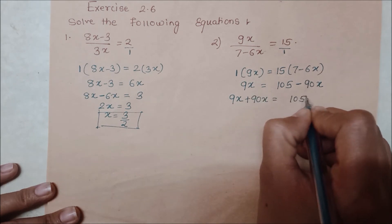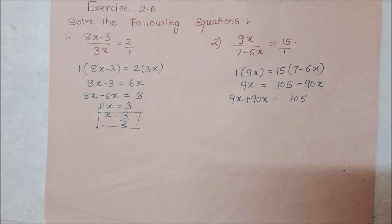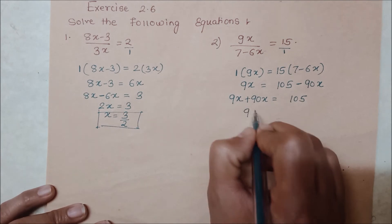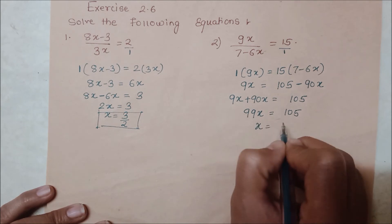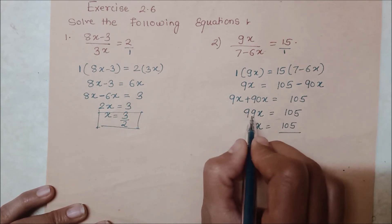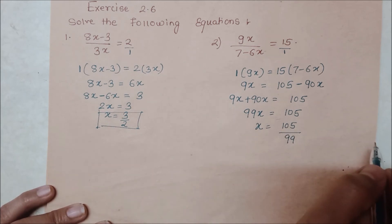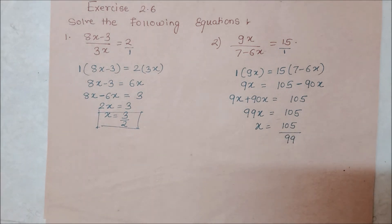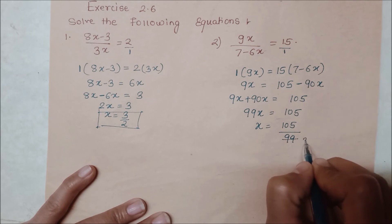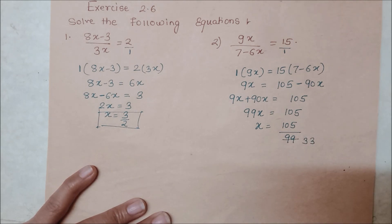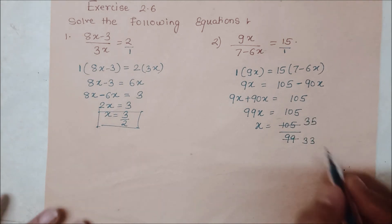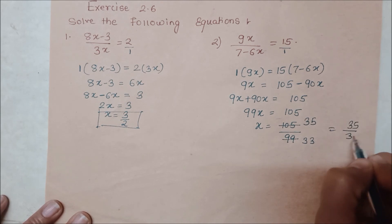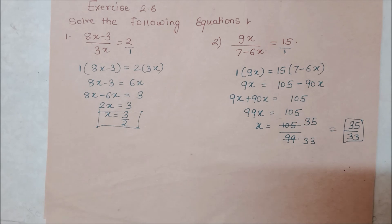105 jo wahin ka wahin hai, aur 90 plus 9 matlab 99x is equal to 105. x yahan rahega, 105 apni jagah rahega, 99 multiply mein tha, yahan aayega toh divide ho jayega. Ab yah dono numbers 3 se divide ho sakte hain — simplify karte hain: 3 threes are 9, so 99 becomes 33; 3 fives are 15, so 105 becomes 35. Therefore x = 35 upon 33.